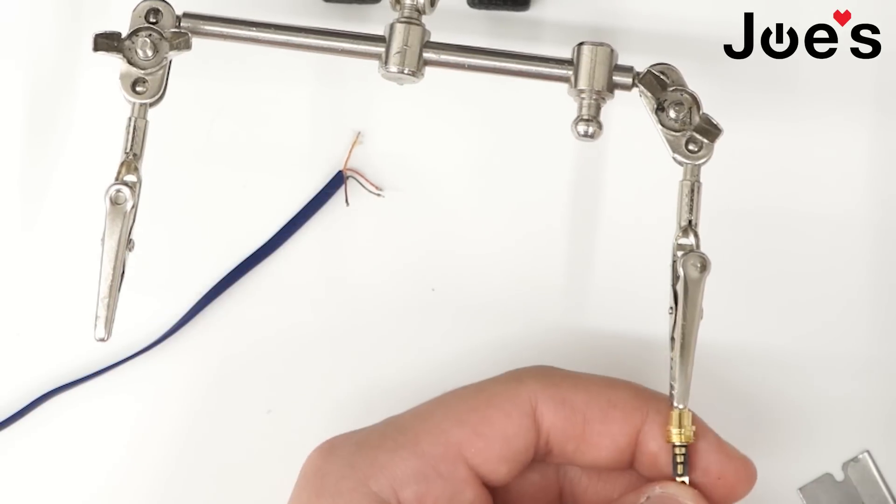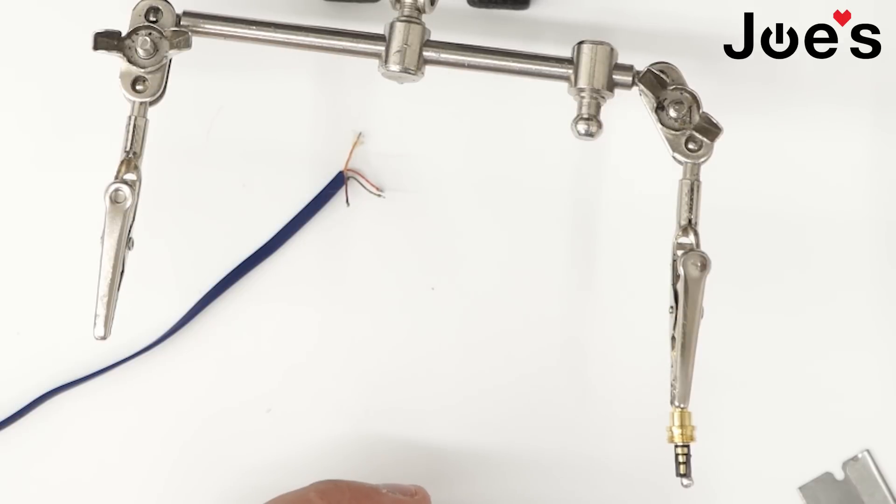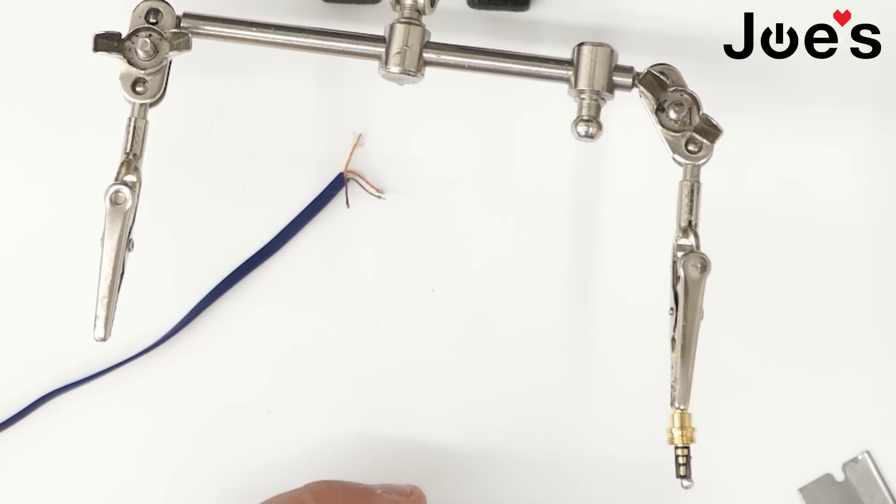Take some solder. The end will be the mic where the mic wire goes on. Apply some solder onto there. Apply some solder on each individual point.